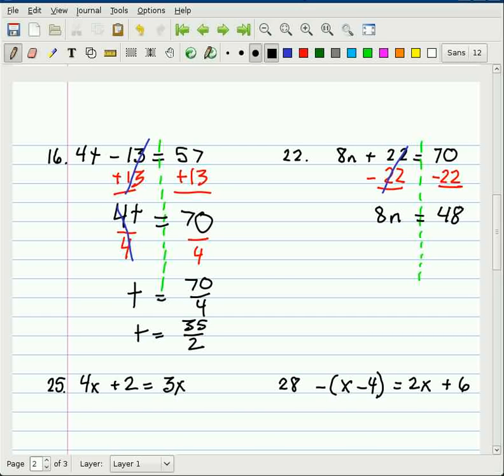And the inverse operation for 8 times n is to divide by 8. And we do it to both sides. And those 8's are gone. So we're left with n equals. 6 times 8 is 48. So n = 6.